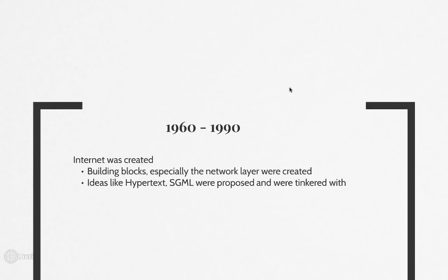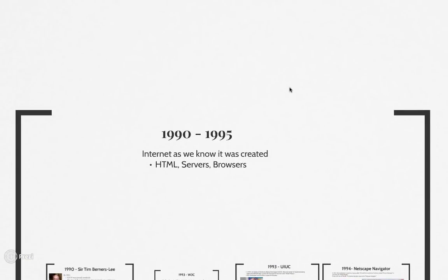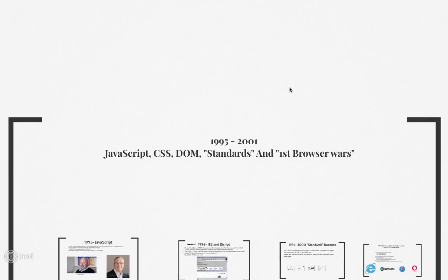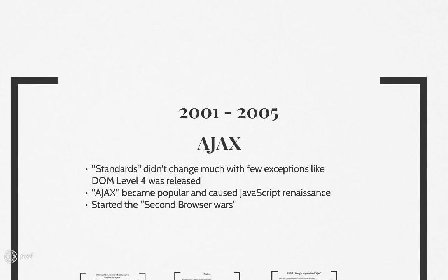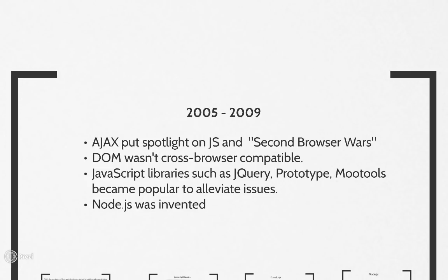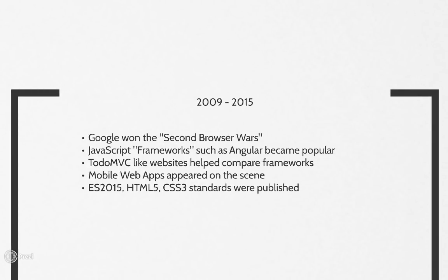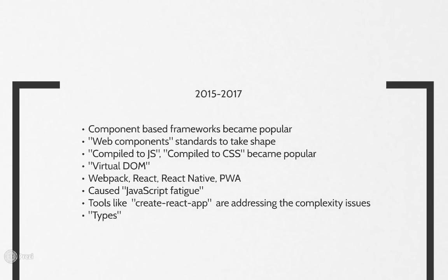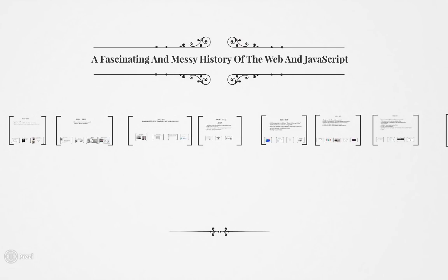To summarize: in the 1960s the internet was created, but not available until 1990. In 1990, the internet as we know it was created. Between 1995 and 2001, JavaScript, CSS, and various standards were created. Between 2001 and 2005, not much changed except for AJAX. Between 2005 and 2009, AJAX put the spotlight on JavaScript and libraries like jQuery came out; Node.js was invented. Between 2009 and 2015, Google Chrome emerged and won the second browser wars, taking market share from Internet Explorer; frameworks like Angular became popular and TodoMVC was created to compare them. Between 2015 and 2017, a lot happened and the way we write JavaScript itself changed. Hope you enjoyed it, learned from it, and were better because of it. Thank you very much.